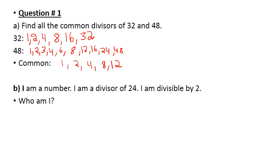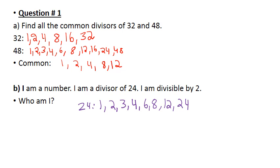Now, I'm a divisor of 24 and I'm divisible by 2. So first, I'm going to list all the divisors of 24: 1, 2, 3, 4 — so we have 4 times 6, 3 times 8, 2 times 12, and 1 times 24.